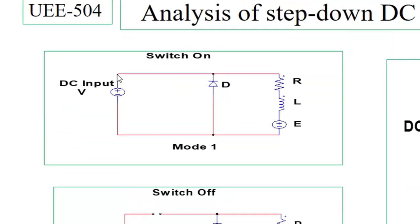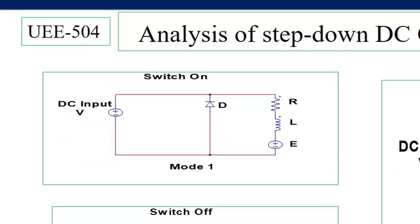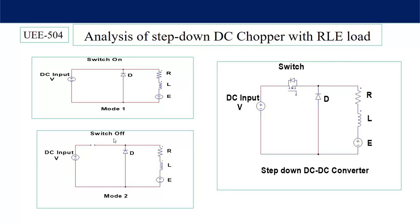When the switch is on, the freewheeling diode is reverse-biased; when the switch is off, the diode becomes forward-biased, maintaining continuous current through the load. However, if the stored inductor energy is fully dissipated or the battery voltage exceeds the inductor voltage, the diode becomes reverse-biased and current drops to zero — that is discontinuous conduction mode. If the current never reaches zero, it is continuous conduction mode. Let's analyze this mathematically.